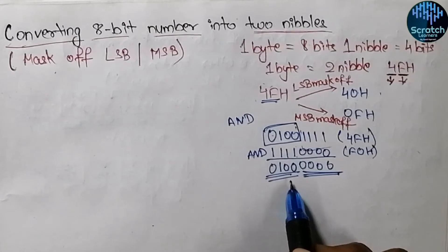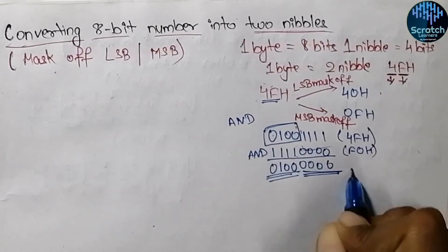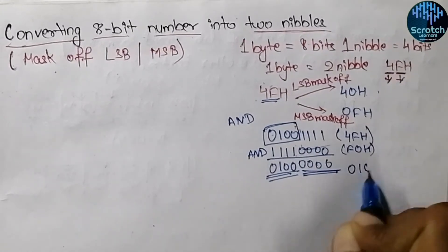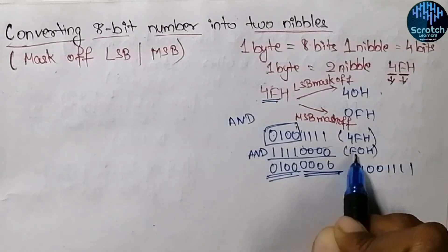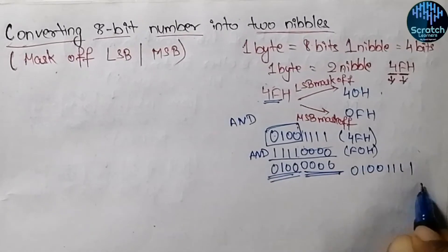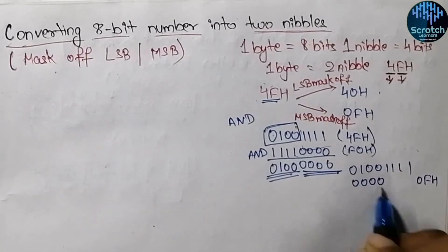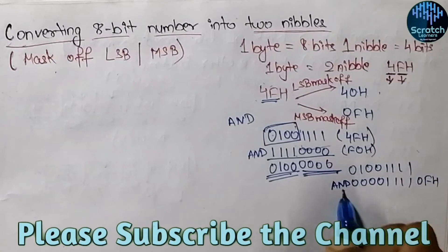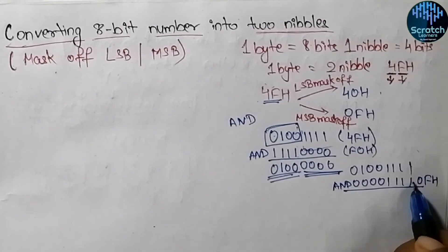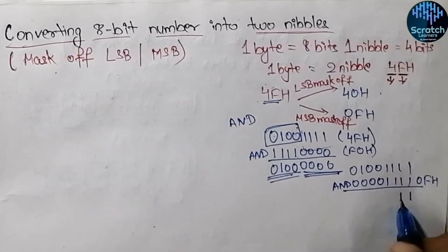Now if we want to perform masking off on the most significant nibble, we take the same example 01001111. We perform the AND operation with 0F hex — which is 00001111 — and performing AND between these two numbers: the upper nibble becomes 0 and the lower nibble bits AND with 1s remain unchanged.